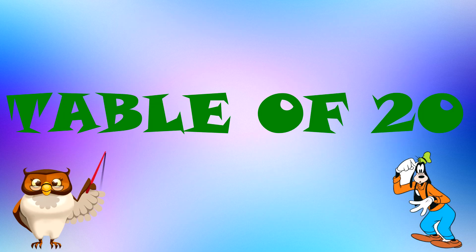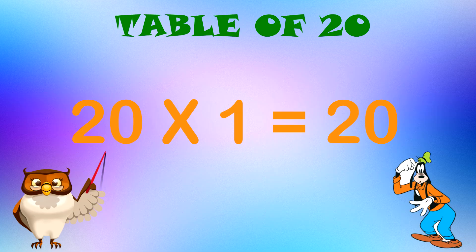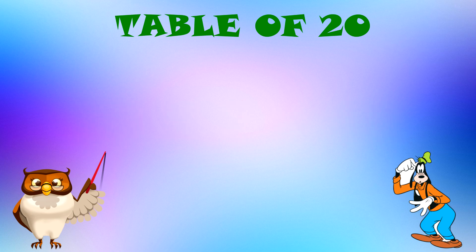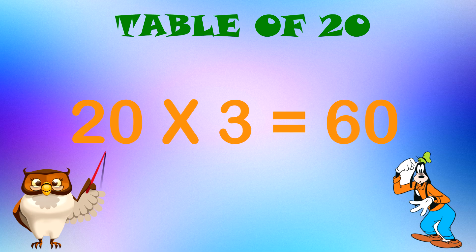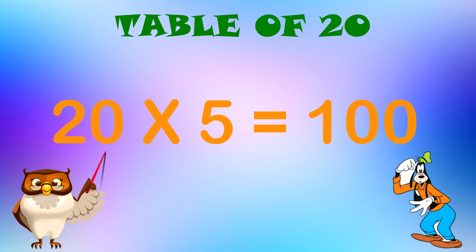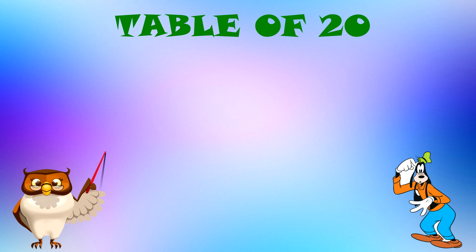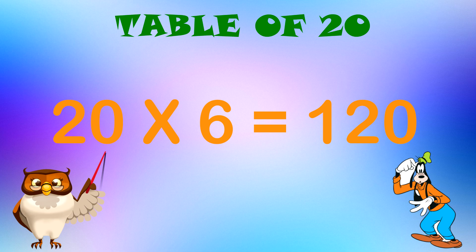Table of 20. 20 x 1 equal to 20. 20 x 2 equal to 40. 20 x 3 equal to 60. 20 x 4 equal to 80. 20 x 5 equal to 100. 20 x 6 equal to 120.